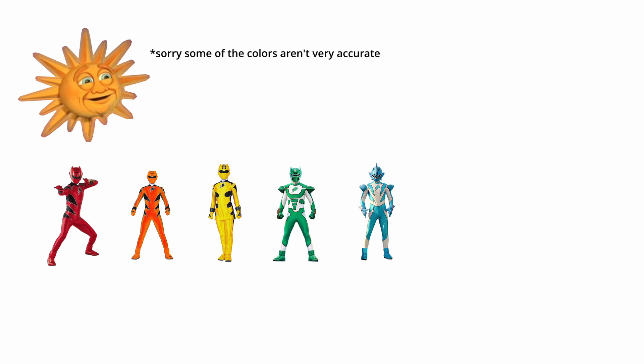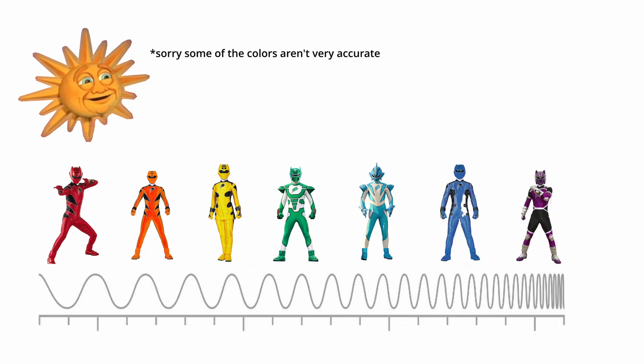Now, natural light itself contains a spectrum of colors, including red, orange, yellow, green, blue, indigo, and violet. Each of these colors have different wavelengths, red having the longest and violet having the shortest.